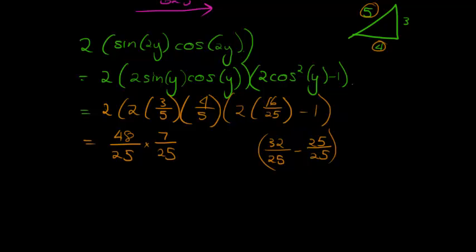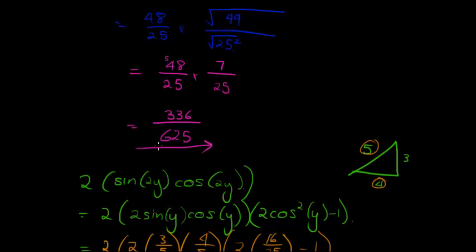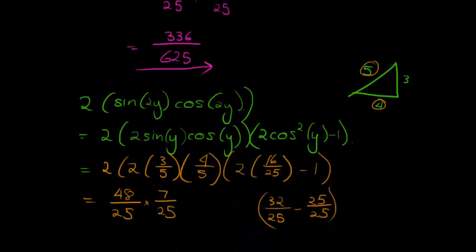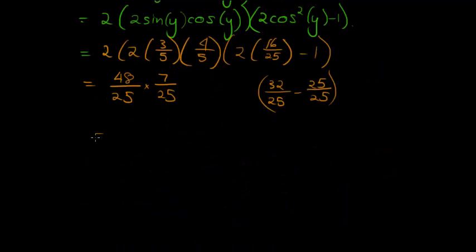And, well, look at that, this simplified back into what we had here, isn't it. Now we've got this again. That part at least, 48 times 7 is, we've already done that, 336 over 625. There we go.